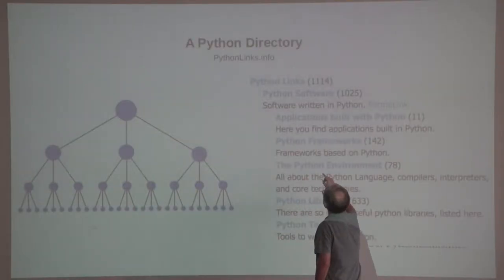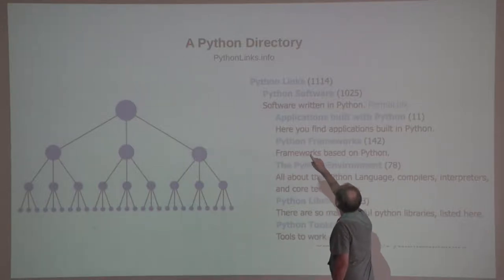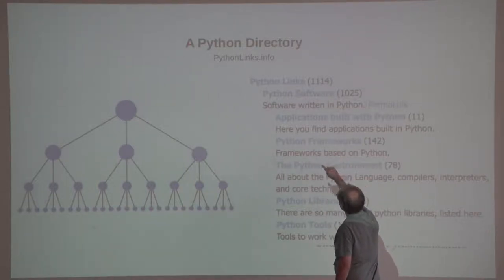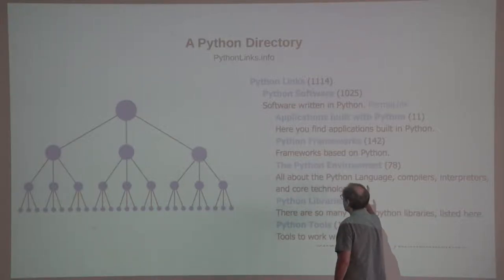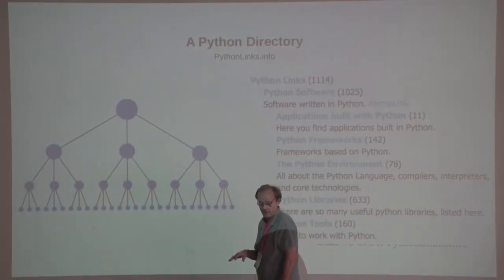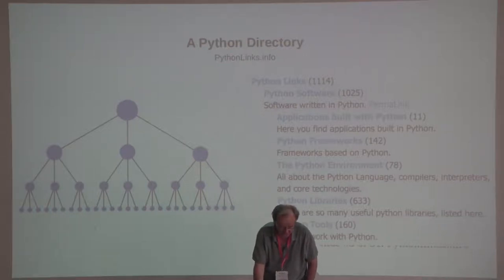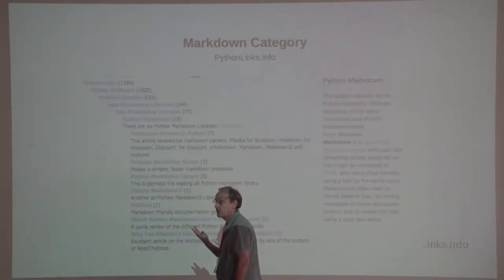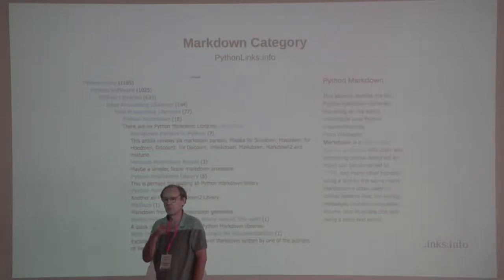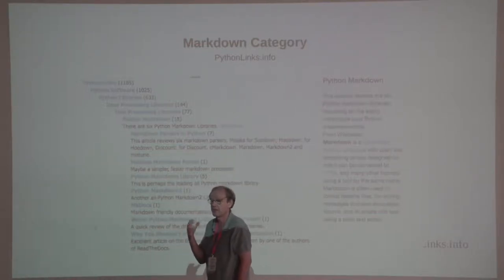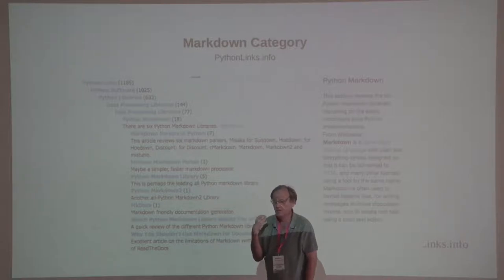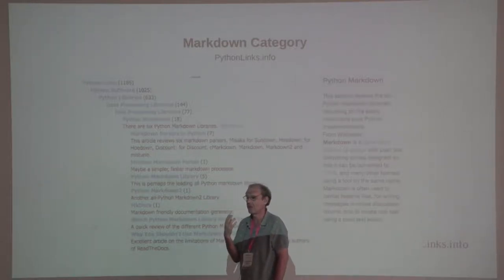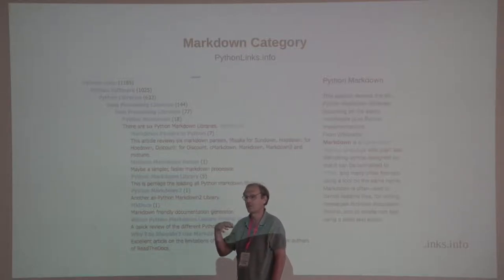Here's what the website looks like. You can see we're two levels deep — we're in Python Links, Python Software — and we can click into Applications, Python Frameworks, or Python Environment, and click down into the tree. Here's the Markdown category. There are six major Markdown libraries, plus one article which reviews the different ones, so they're all located in one place. If you're interested in discovering what the different Markdown libraries are, this is good — it's very different from a search engine.